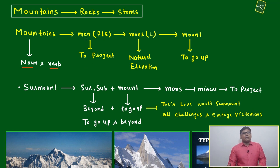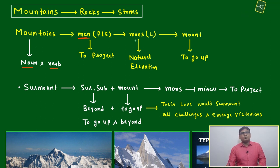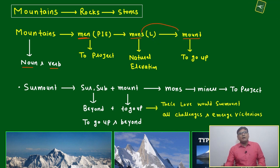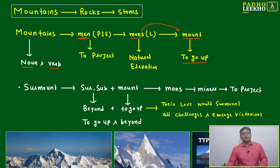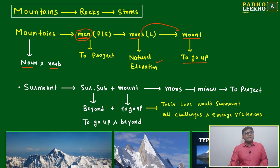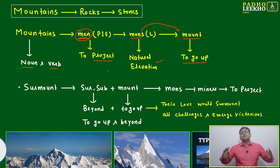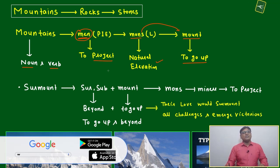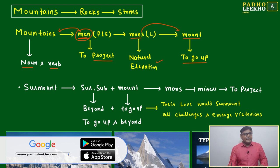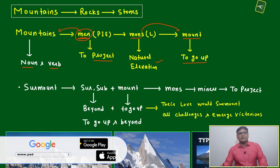Mountains can be used in the form of a noun and also in the form of a verb. Basically it has come from 'men,' that is Proto-Indo-European language. Another root is 'mons,' which is Latin. Another derived root is 'mount.' All meanings relate to going up — this is a natural elevation. The meaning is also to project. If you close your eyes and imagine a mountain, it is just a projection on the earth. The root is 'men.'